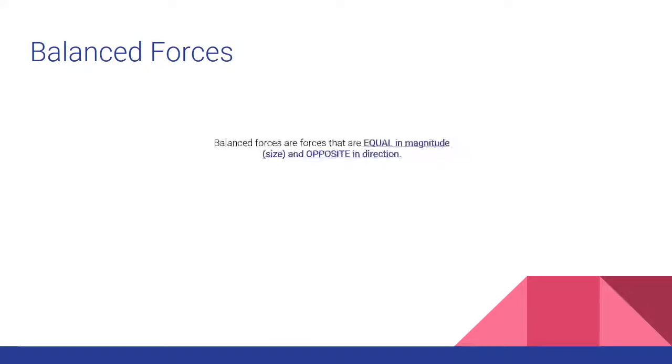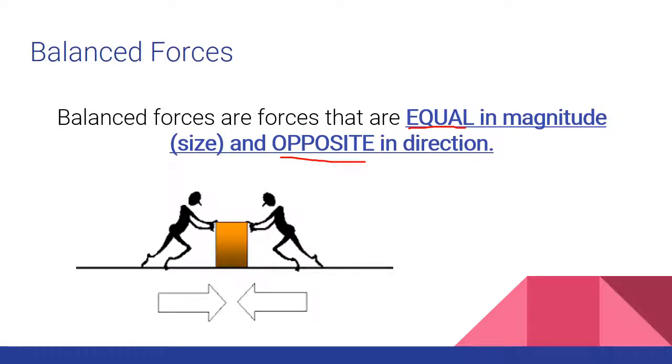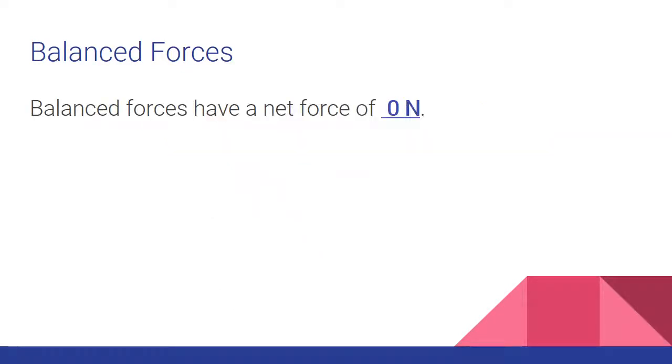Balanced forces are going to be equal in magnitude which is size but opposite in direction. So that might look like this. We have two guys pushing. They are pushing in opposite directions with an equal amount of force. The result is you have a net force of zero newtons.